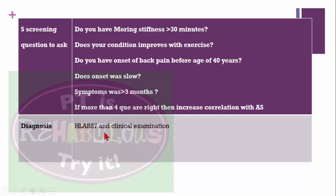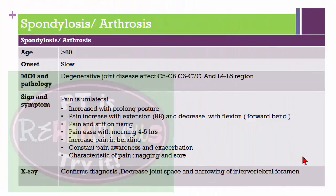Lumbar spondylosis or arthrosis is common in the 60s with slow onset. It is caused by degenerative joint disease, affecting the L4-L5 region. Signs and symptoms include unilateral pain with prolonged posture, pain increasing with extension and decreasing with flexion, morning stiffness for four to five hours, increased pain with backward bending, and constant nagging or sore pain. X-ray confirms the diagnosis showing decreased joint space and narrowing of intervertebral foramen.